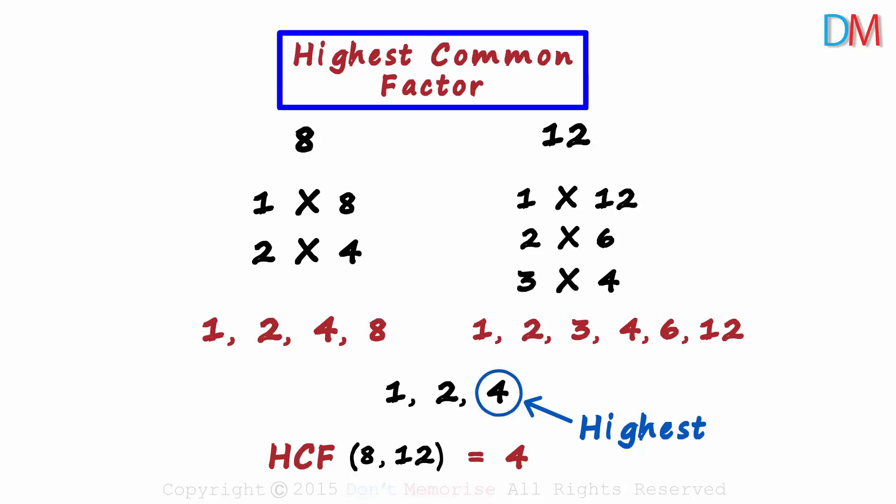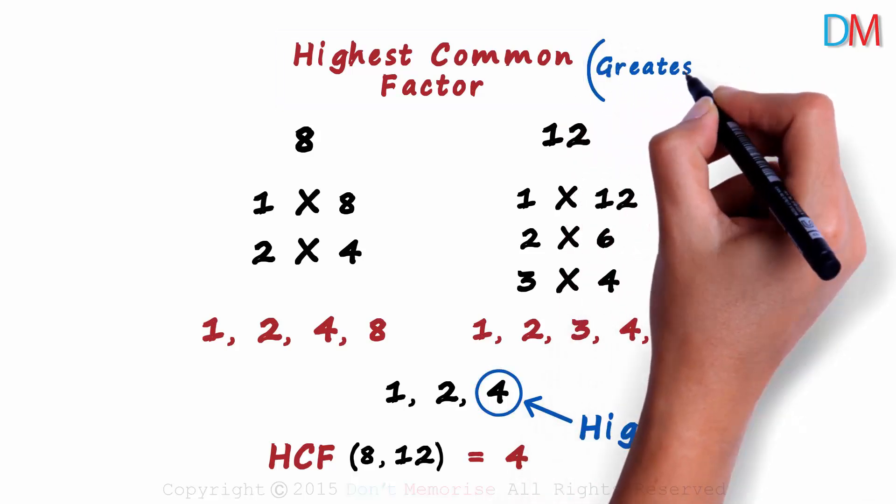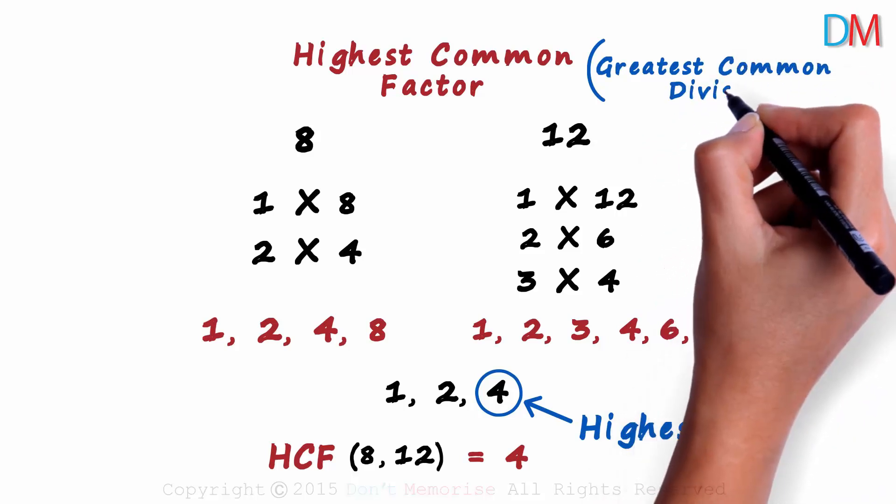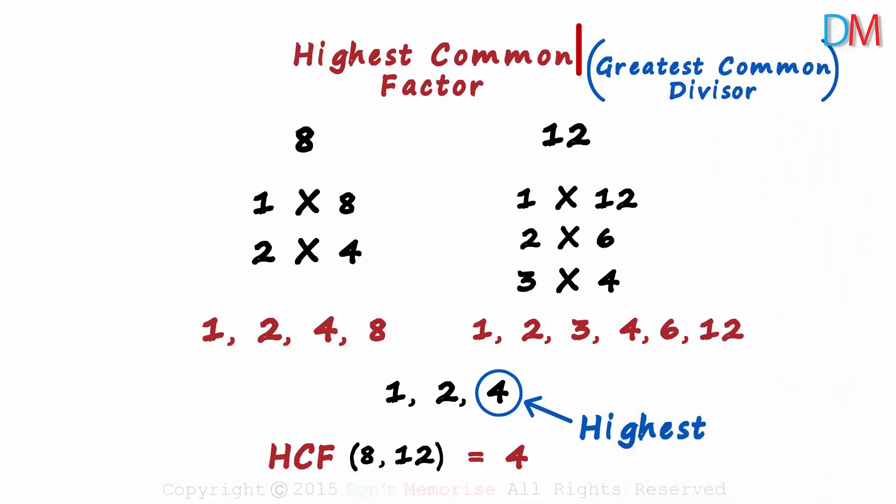The highest common factor is also commonly known as the greatest common divisor or the GCD. Even GCD means the same thing. Greatest is the same as highest, and factors of a number are also their divisors. For example, 4 is a divisor of 8. 3 is a divisor of 12. That's the concept of HCF or GCD.